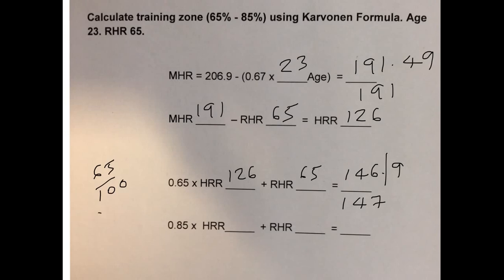And 85% is the same as 85 over 100 which is 0.85. So 0.85 times the heart rate reserve of 126 plus the resting heart rate of 65 gives you an upper limit of 172.1, and we can just round that down to 172.